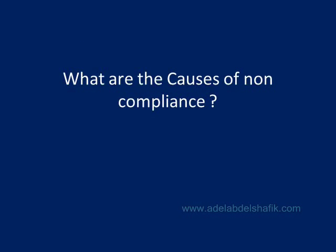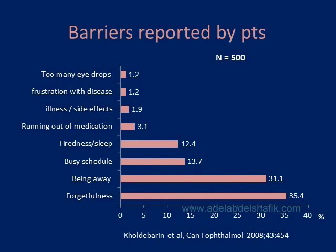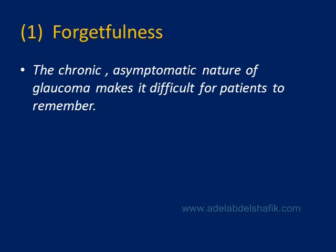Regarding the causes of non-adherence, a study on 300 patients found that forgetting to use the drug accounted for 40% of cases, the cost of the drug was 25%, then side effects and running out of drugs. Forgetting is the main cause. In another study on 500 patients, forgetting was 35% and being away from the drug was 31%. Forgetfulness is the main factor, as glaucoma is chronic and asymptomatic, making it difficult for patients to remember putting in the drug.